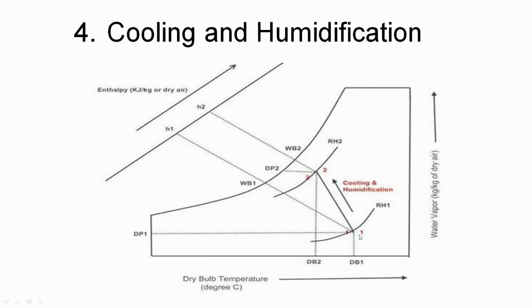Simultaneously, the temperature is reduced from point one to two. Here we can see w1 and w2 are different, and the dry bulb temperature of points one and two has changed — from point one to two, temperature is reduced and relative humidity or specific humidity is increased. This process is called cooling and humidification.